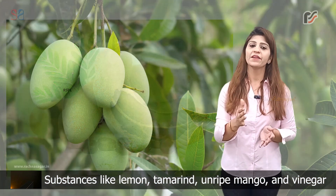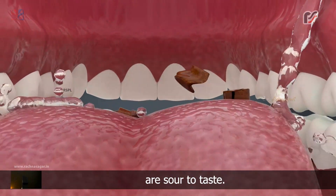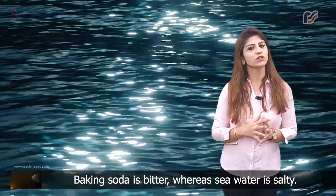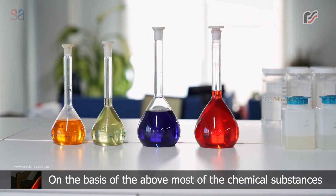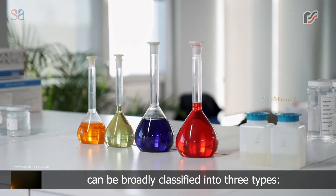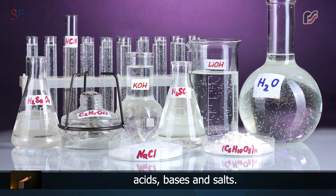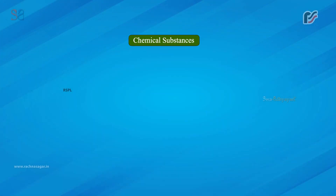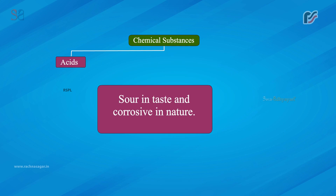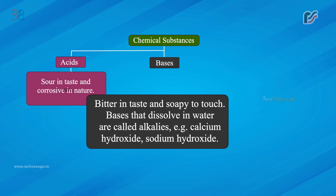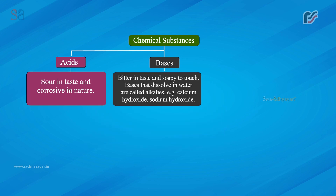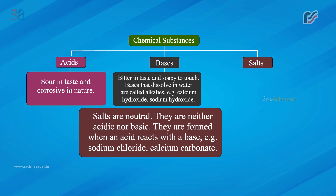Substances like lemon, tamarind, unripe mango and vinegar are sour to taste. Baking soda is bitter whereas seawater is salty. On the basis of the above, most chemical substances can be broadly classified into three types: acids — sour in taste and corrosive in nature; bases — bitter in taste and soapy to touch. Bases that dissolve in water are called alkalis, for example calcium hydroxide and sodium hydroxide. Salts are neutral — neither acidic nor basic. They are formed when an acid reacts with a base. Example: sodium chloride, calcium carbonate.